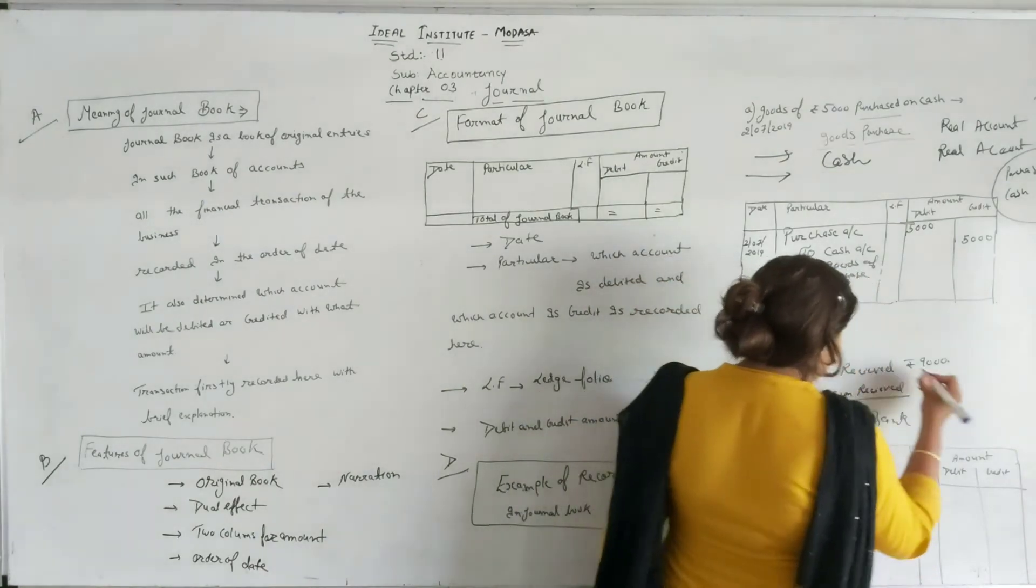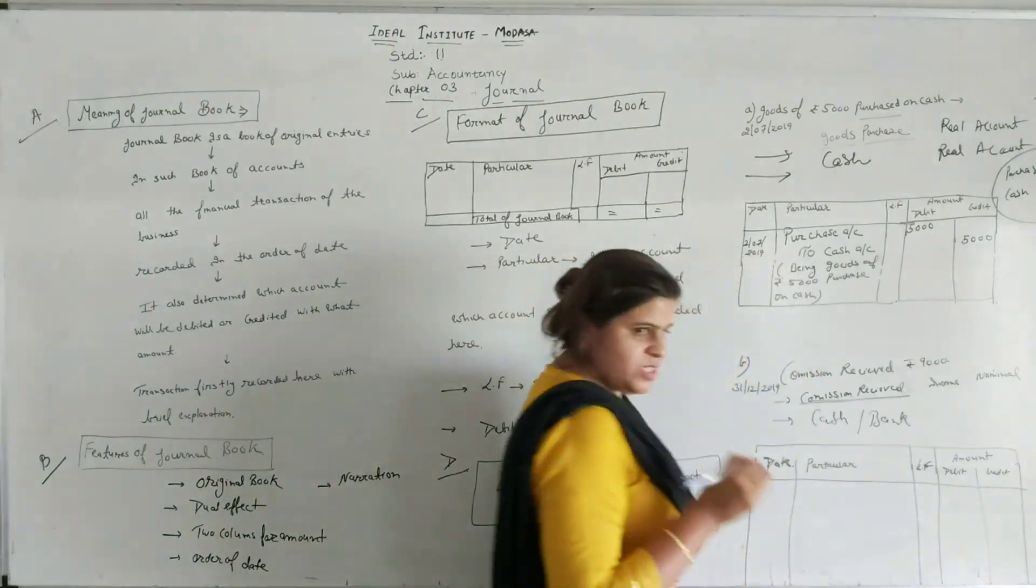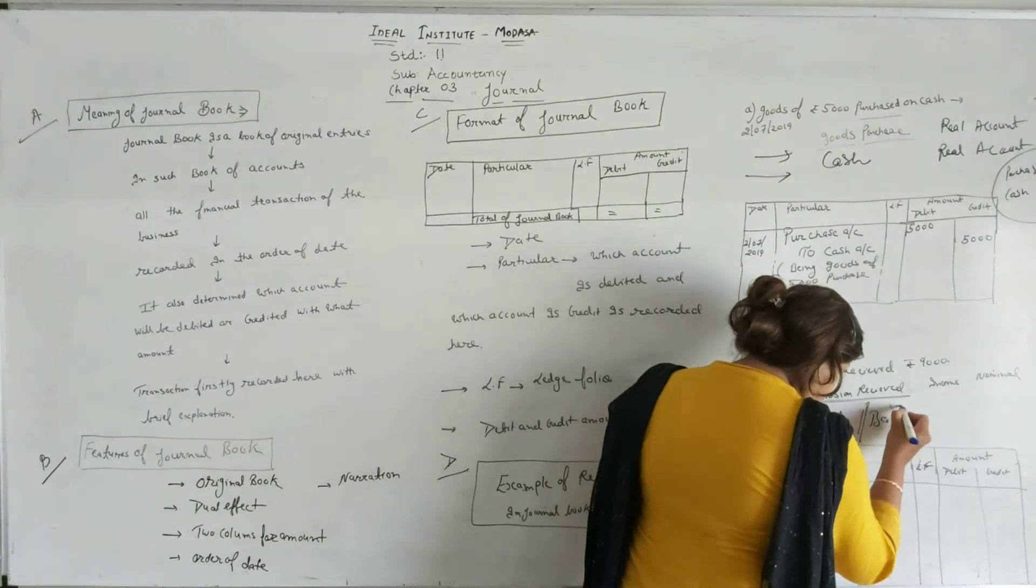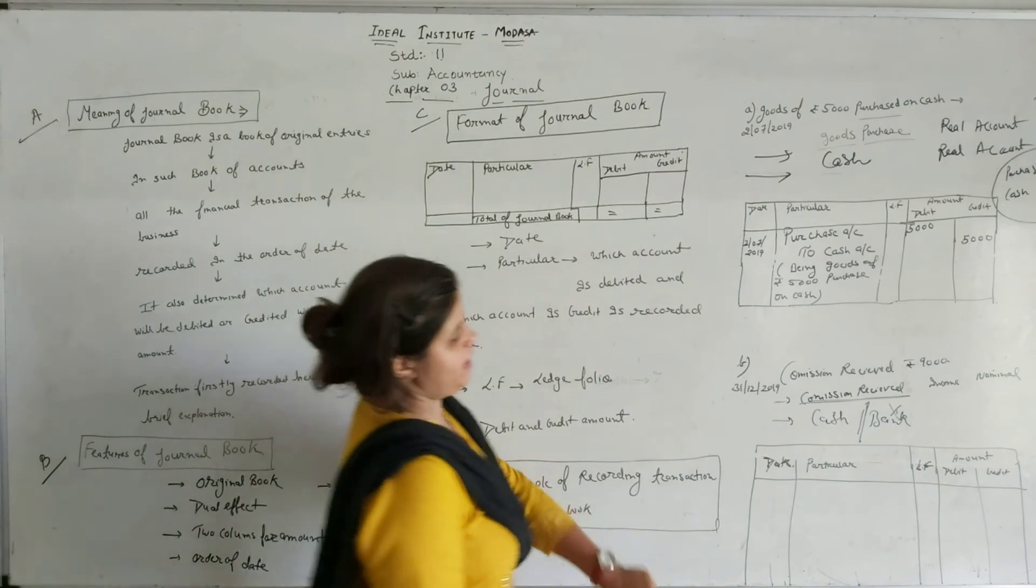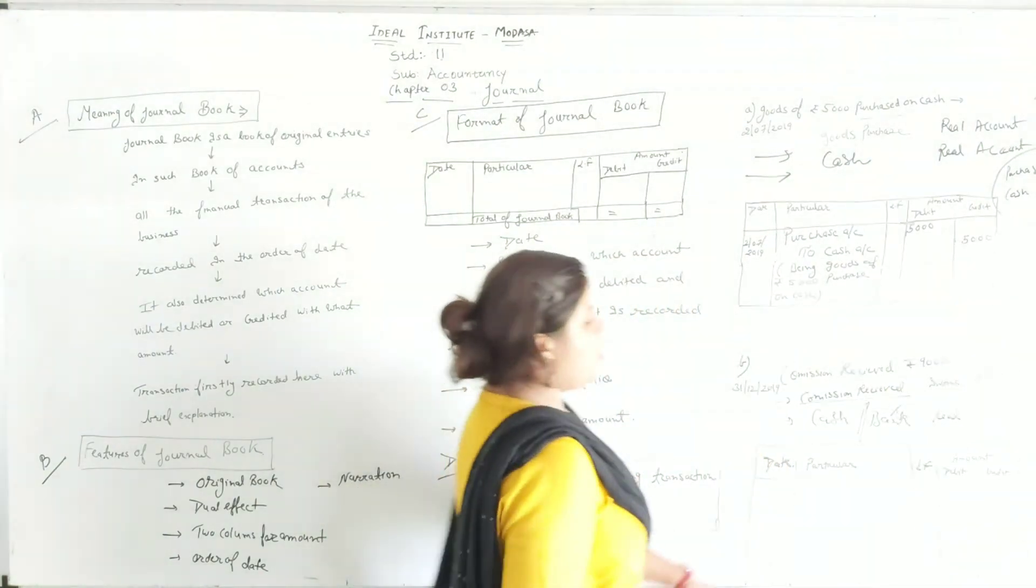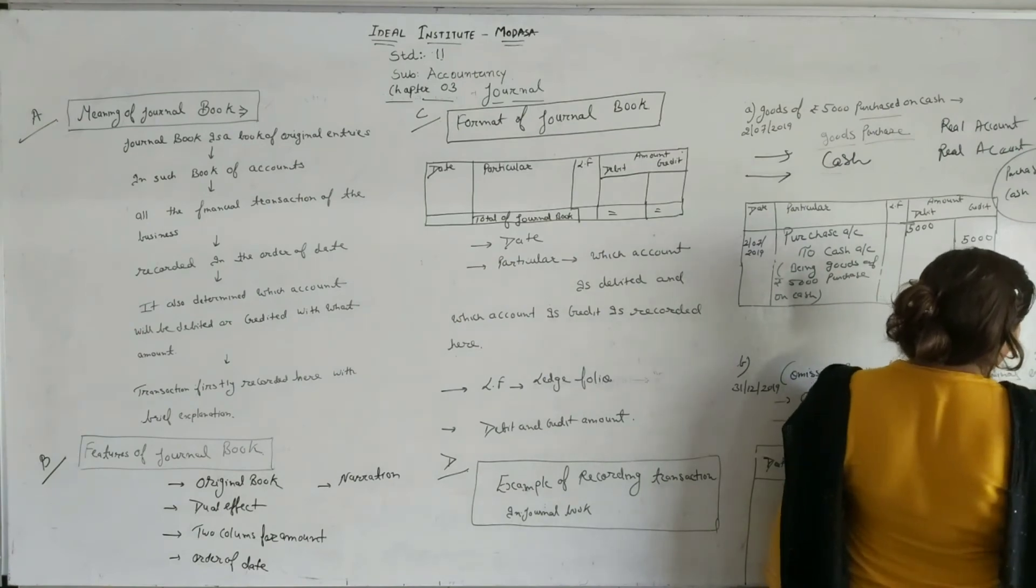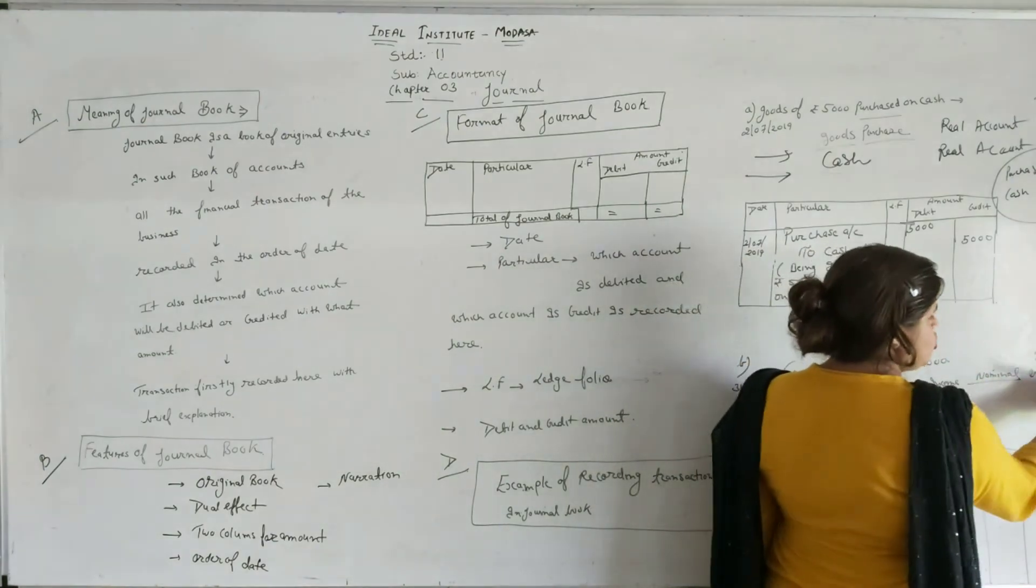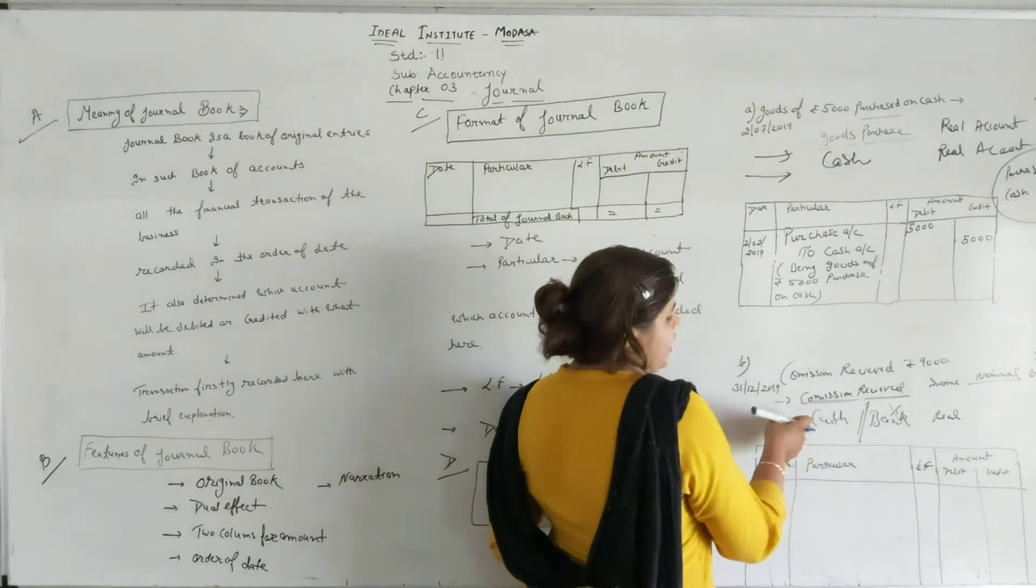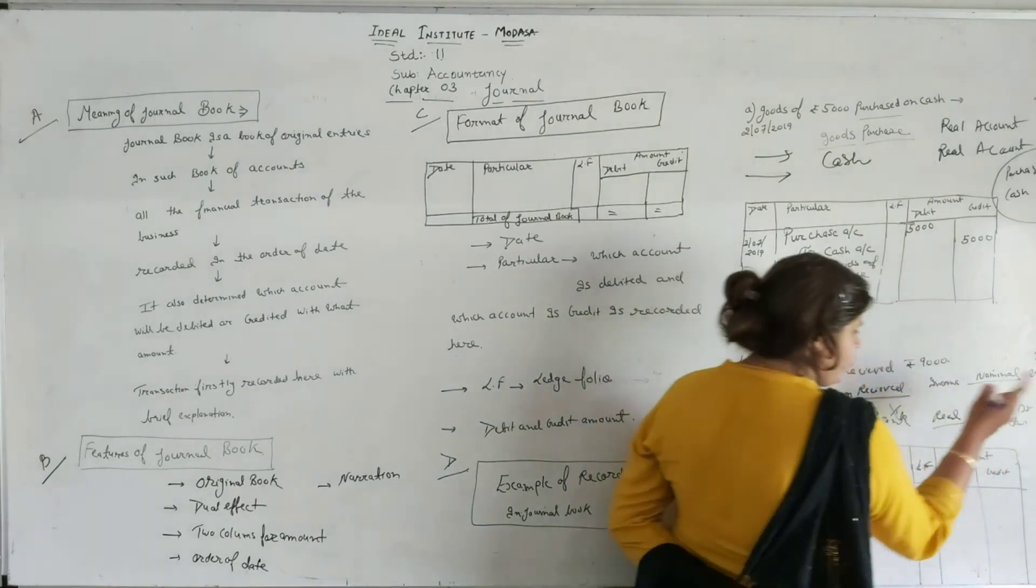And you know the debit credit rule of real account. Now you remember, what is the debit and credit rule of nominal nature? Debit all expenses, credit all income. And here, you are receiving, means it is your income. So the position of commission will always be on credit side in particular. And cash is the real account. Real account says debit what comes into the business, credit what goes out from the business. Now here cash is coming, means cash will be debit.